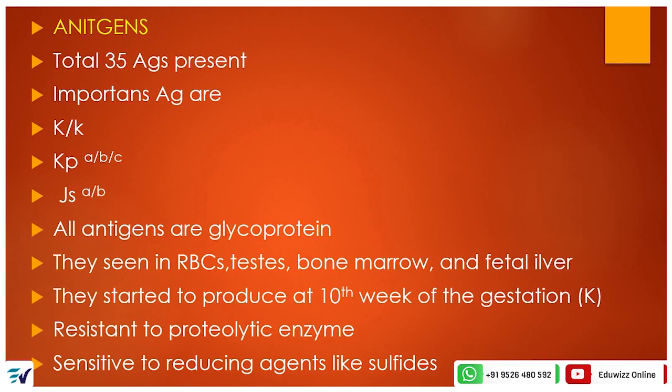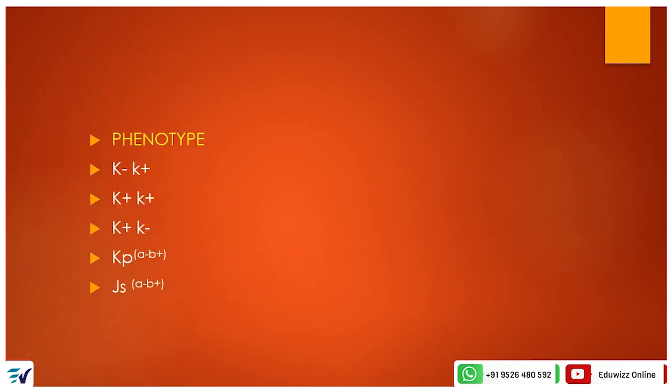Kell antigens begin to be produced at the 10th week of gestation, when erythropoiesis starts in the fetus. These antigens are resistant to proteolytic enzymes, which are commonly used in antiglobulin testing. However, they are sensitive to reducing agents like sulfides. The antigens are present on RBCs as glycoproteins linked to the XK protein.